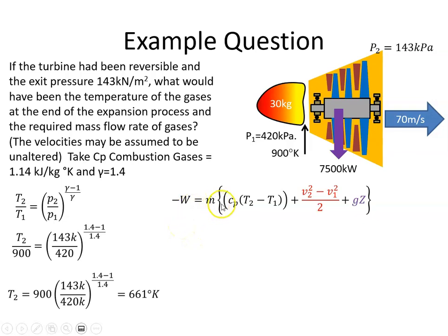The work then is the change in enthalpy plus the change in kinetic energy plus the change in potential energy, though we're neglecting that. We had already worked out that the velocity was 57.44 meters per second here. We were given this velocity as 70. And we assumed everything else was the same.